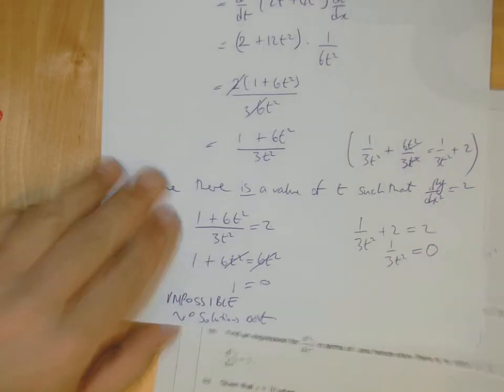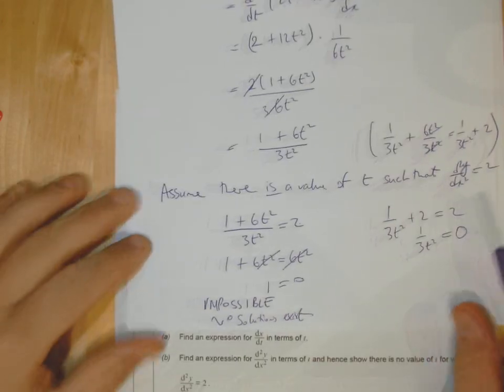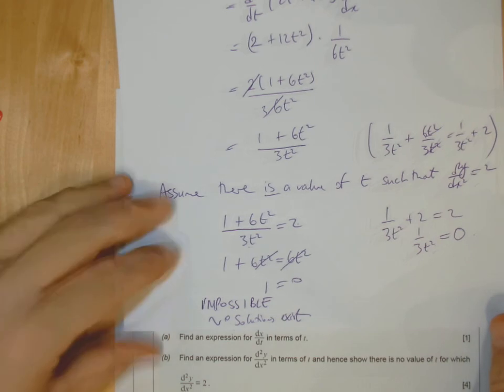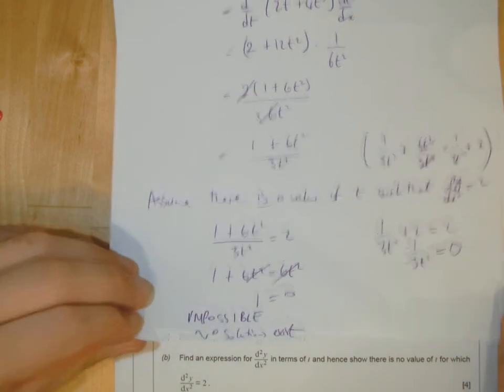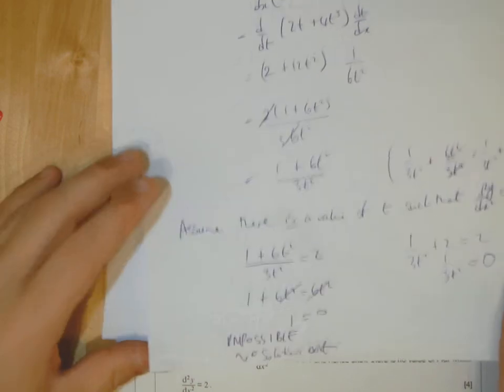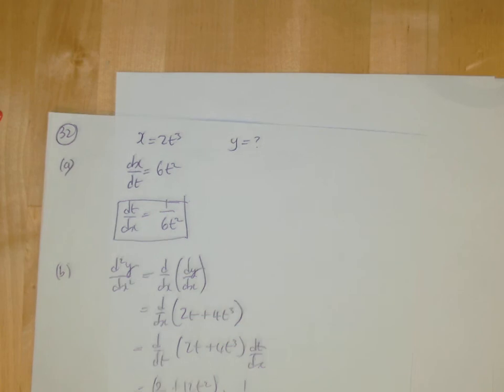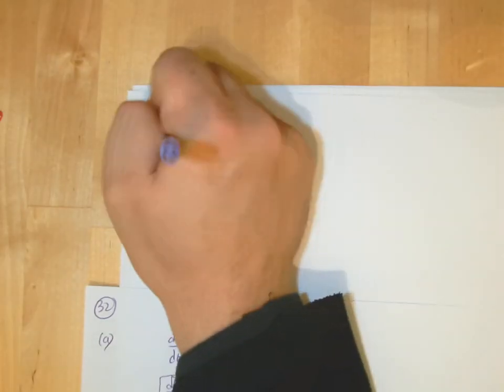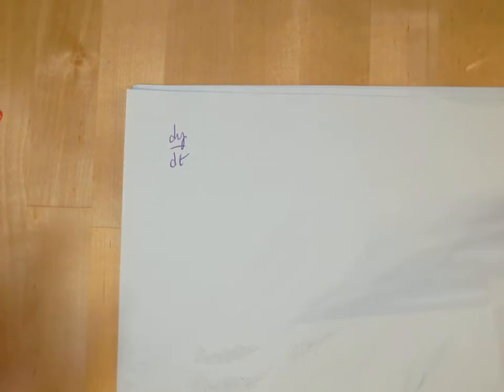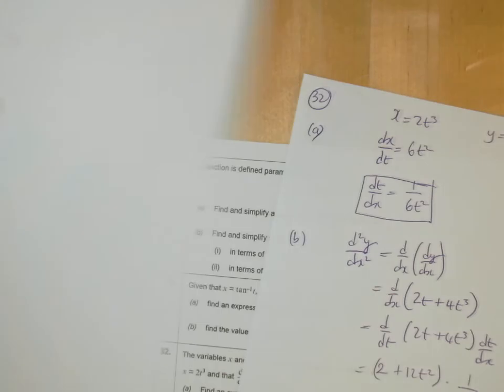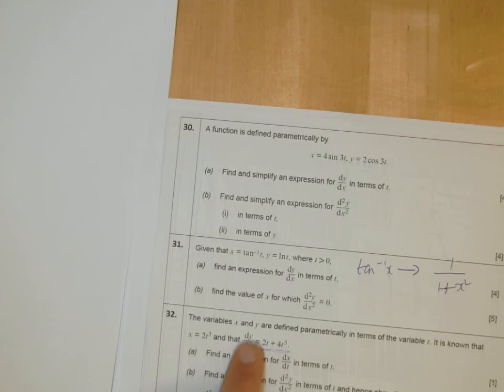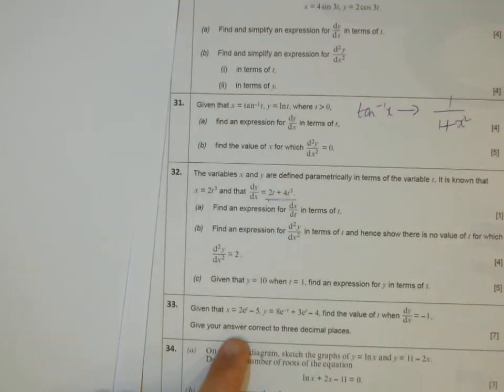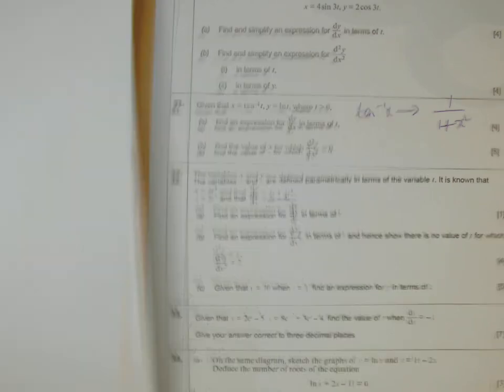We're done on this. Part C says, given that y equals 10 when t equals 1, find an expression for y in terms of t. Now in this case here, we've got to integrate. Now we know what dy dt is. Or do we know what it is? Let's just search back here. We know dy dx. We don't know what dy dt is. That might cause a bit of a problem for us.